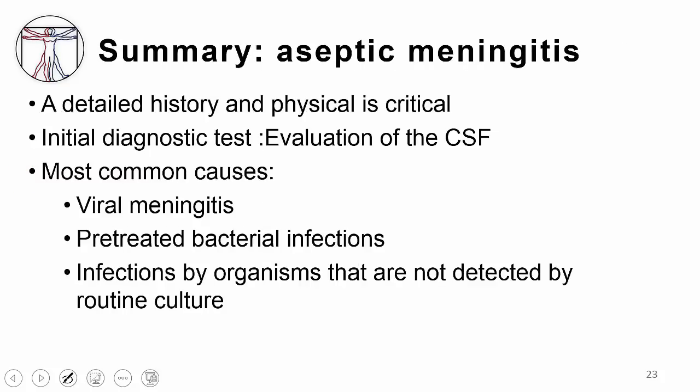In summary, aseptic meningitis is a very common clinical syndrome. A detailed history and physical is critical. The initial diagnostic test is evaluation of the CSF, and the most common causes are viral meningitis, pre-treated bacterial infections, and infections by organisms not usually detected on routine culture.